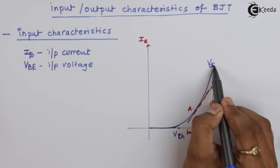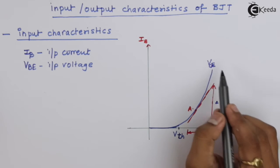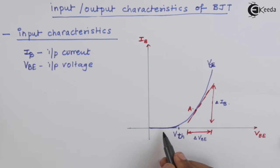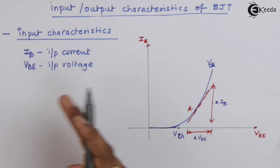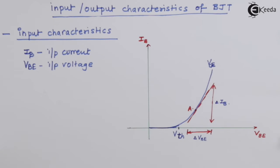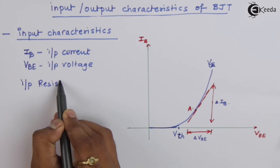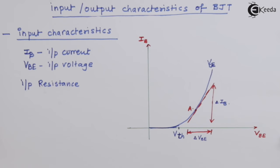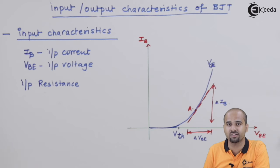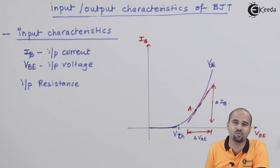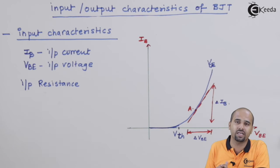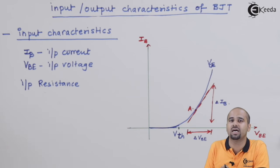If the output voltage Vce is varied, this input characteristics graph will shift towards the left or right side accordingly. From this graph we have to find out the input resistance. In generalized terms we will call it input impedance, because non-linear relationships involving capacitors and inductors in the BJT amplifier circuit may also come into picture.